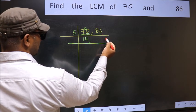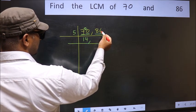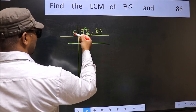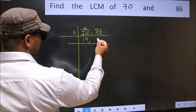The other number is 86. The last digit is neither 0 nor 5, so this is not divisible by 5. So you write it down as it is.